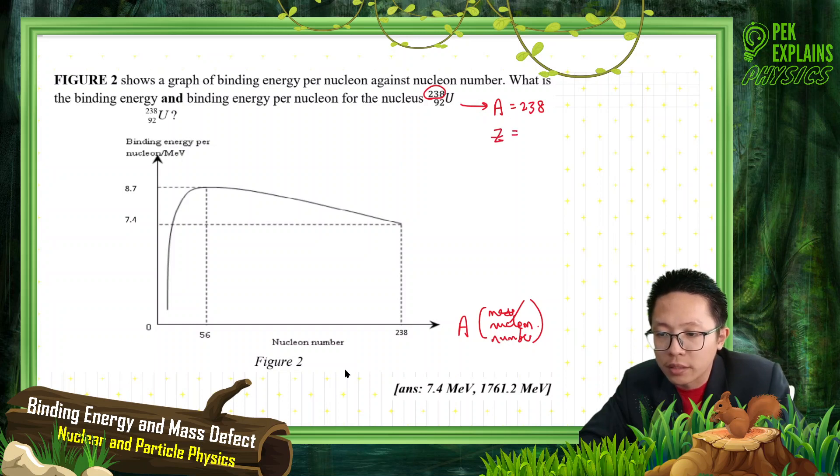The proton number is 92, but don't bother about the proton number. We want the nucleon number 238.